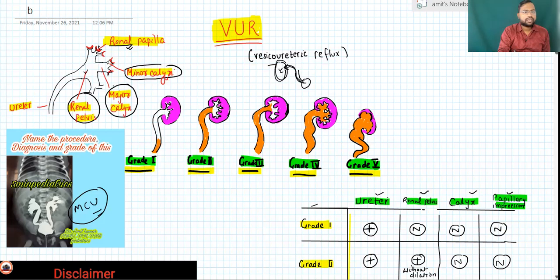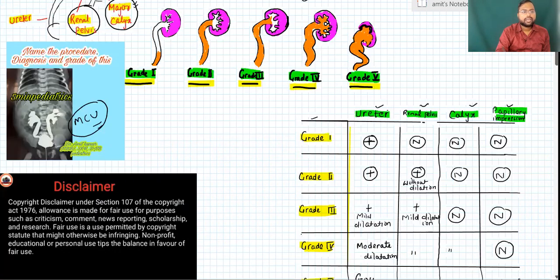Before knowing the grade of VUR, we must know the anatomy of the kidney. We have the ureter coming from the bladder, and the dilated part is called the renal pelvis. This further divides into major calyxes and then minor calyxes, and here we have the renal papilla. I will use all this terminology in the grading.